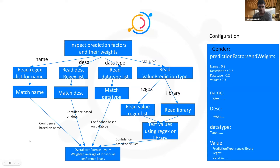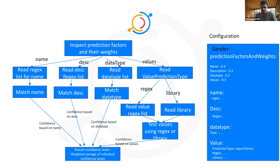This is how we actually determine if a particular info type applies to a given column. We compute several different parameters, like regex match on column name, description, the data type, and finally extracting sample values and invoking a machine learning based classification library like spaCy, which uses pre-trained models to do named entity recognition. Using a combination of all these different confidence levels, we compute an overall confidence level to determine if this info type is applicable for a given column. There's a very simple config file that Data Hub admins can use to tweak the regexes or the weights associated with the different parameters, or even add additional info types. This is meant to be a very simple, extensible system.